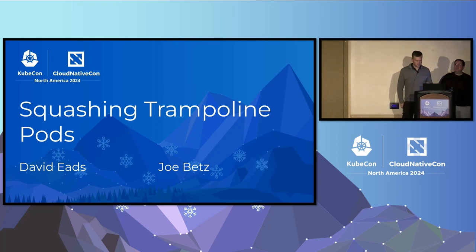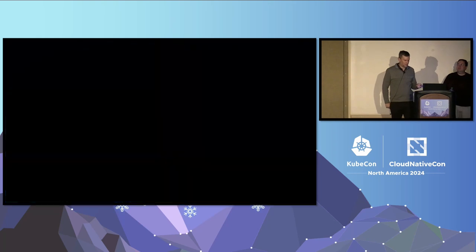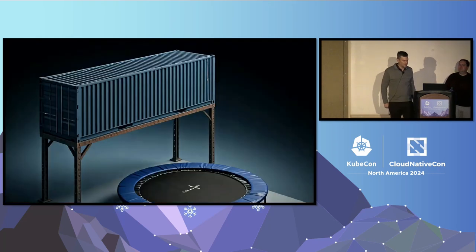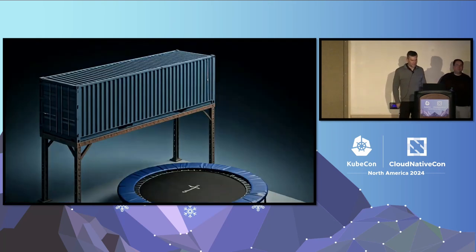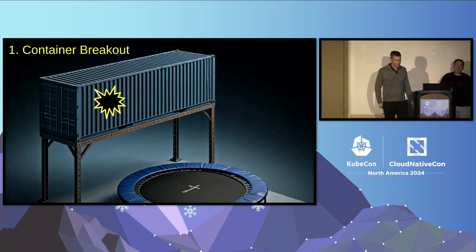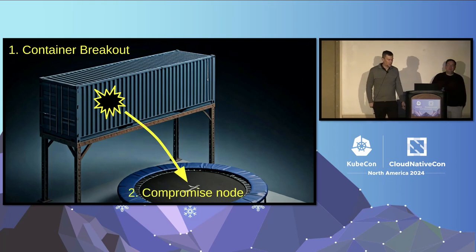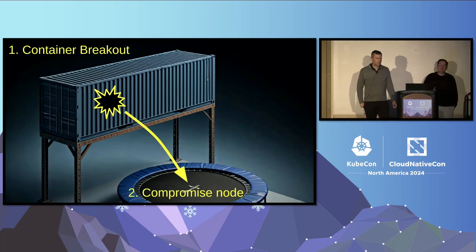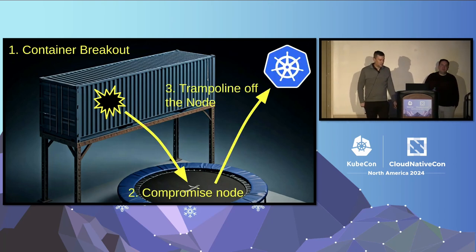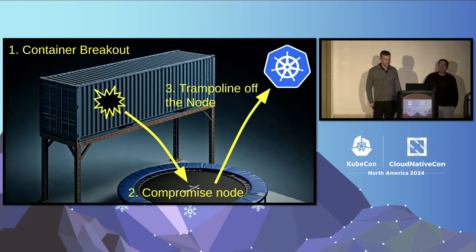Before I go any further, let's explain what that means. A pod trampoline attack starts with a container breakout, followed by a compromise of the node that container is on, followed by an expansion of that attack out into the rest of the cluster — either by jumping to additional nodes or by escalating privileges.